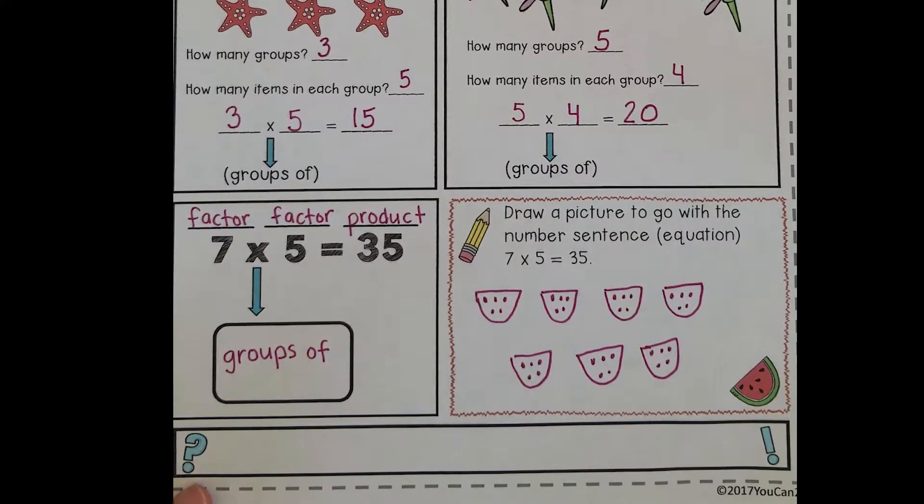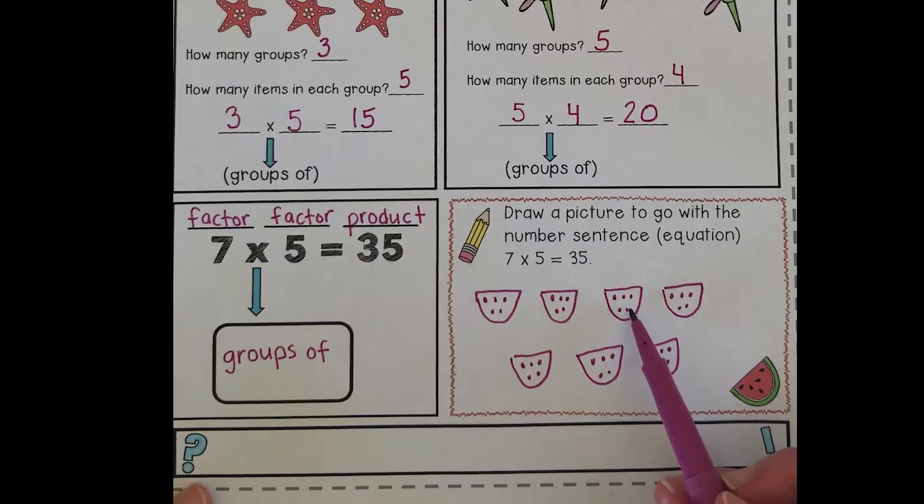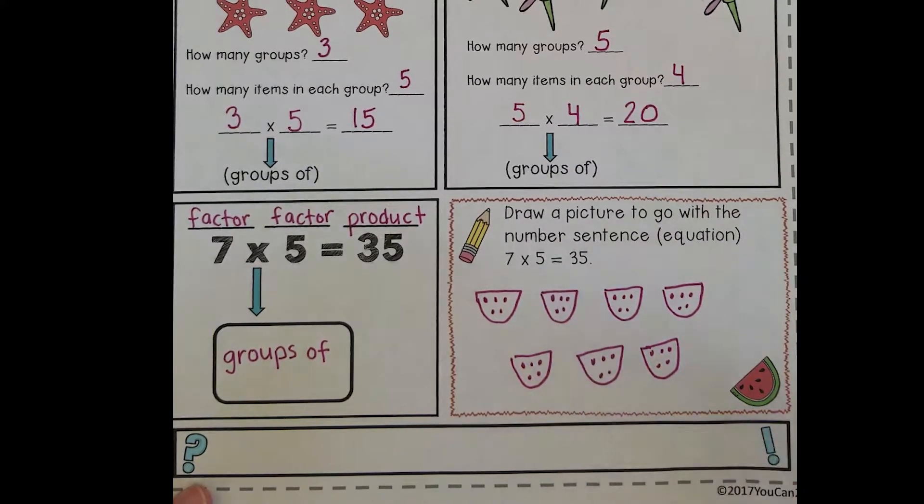That's a lot of watermelon seeds. Toucan wants me to remind you not to swallow watermelon seeds - could grow a plant! Okay, let's see how many watermelon seeds we have all together: 5, 10, 15, 20, 25, 30, 35. Makes sense! Seven groups of five equals 35. Pat yourself on the back.